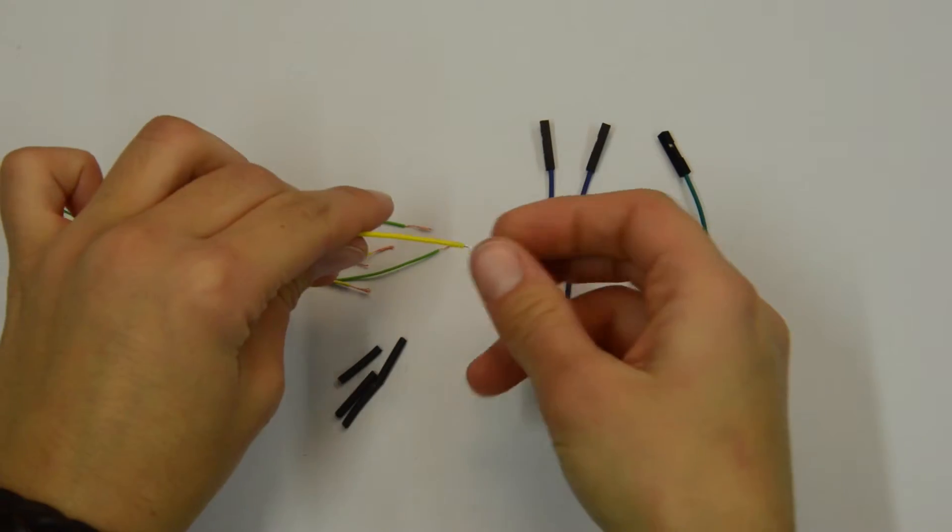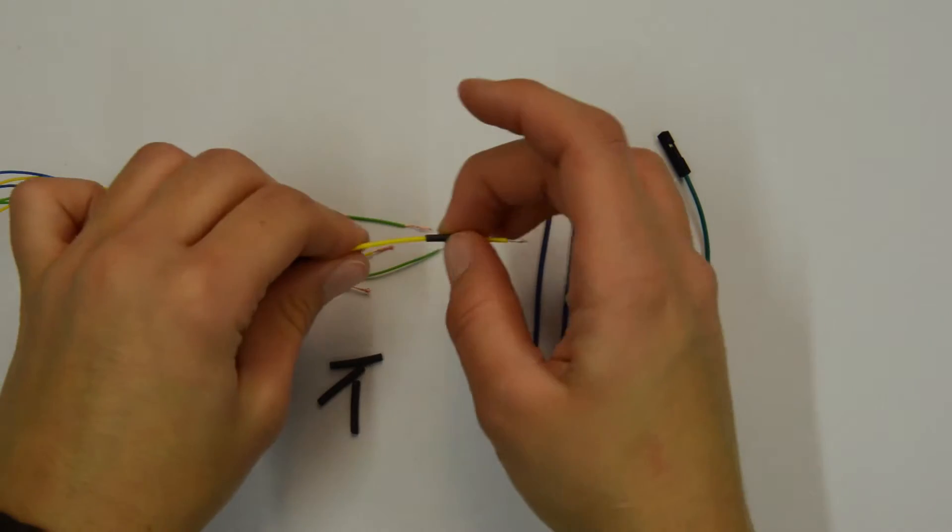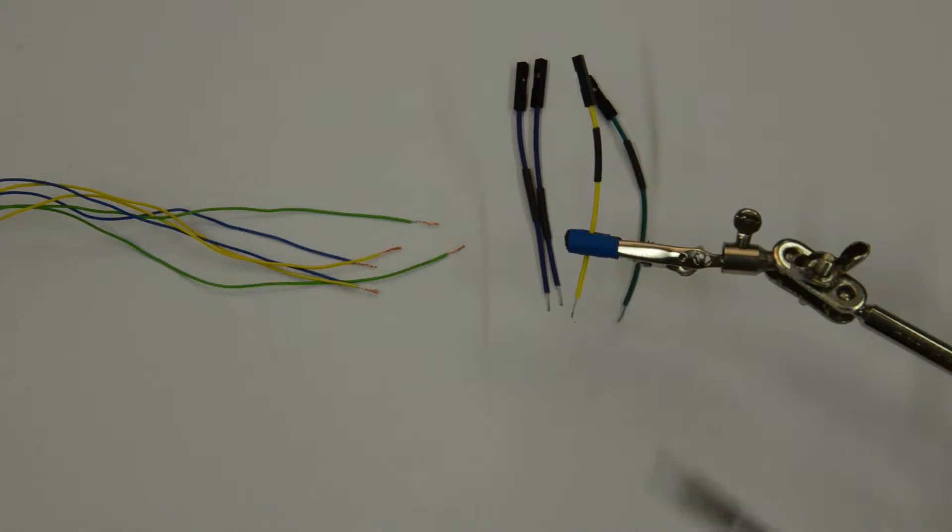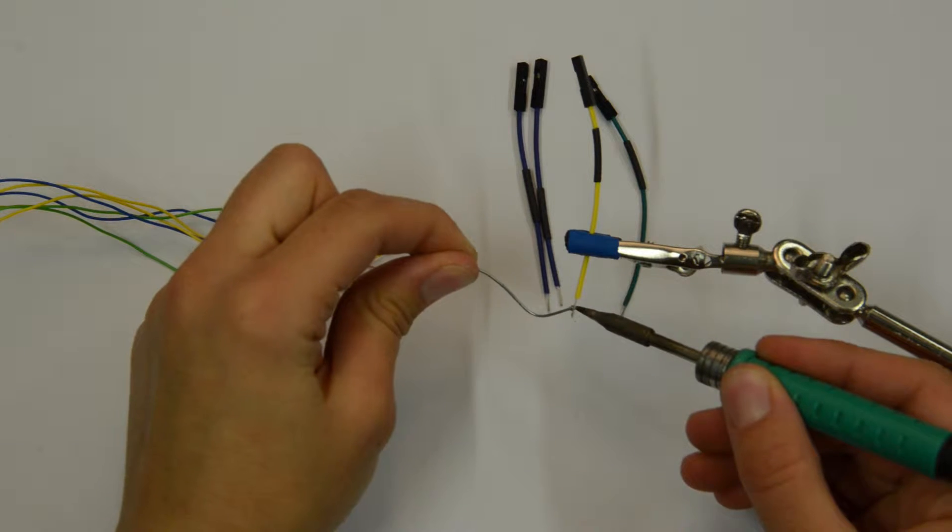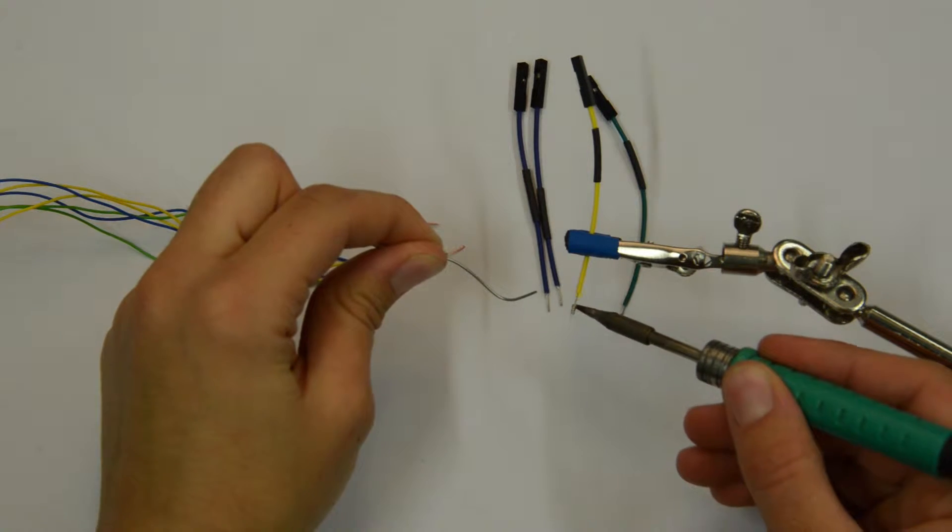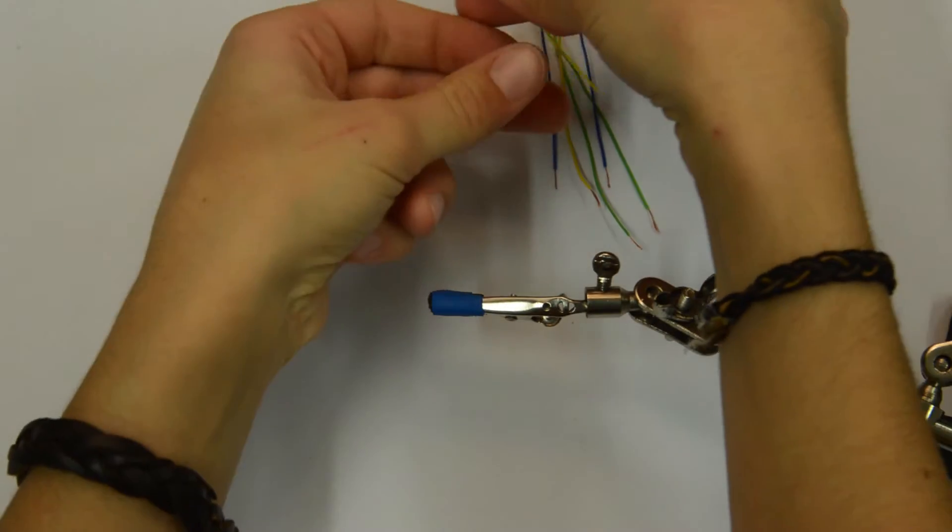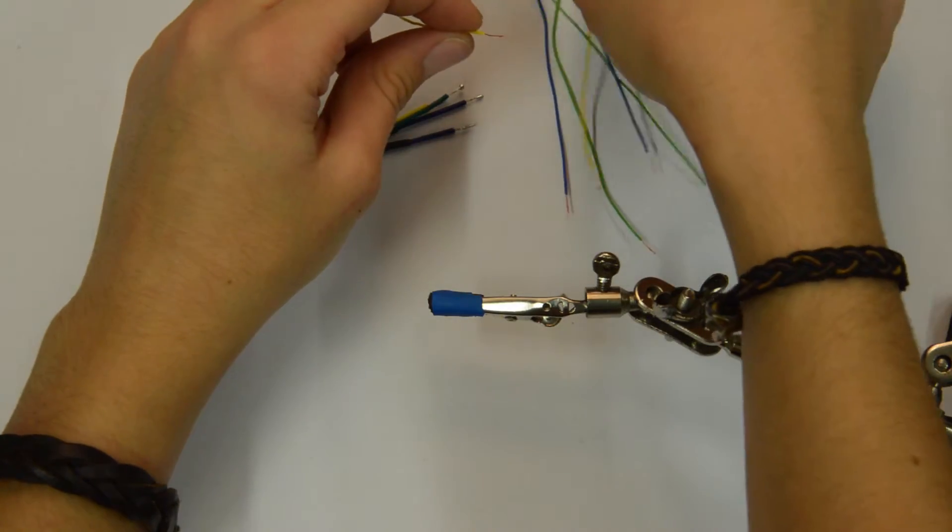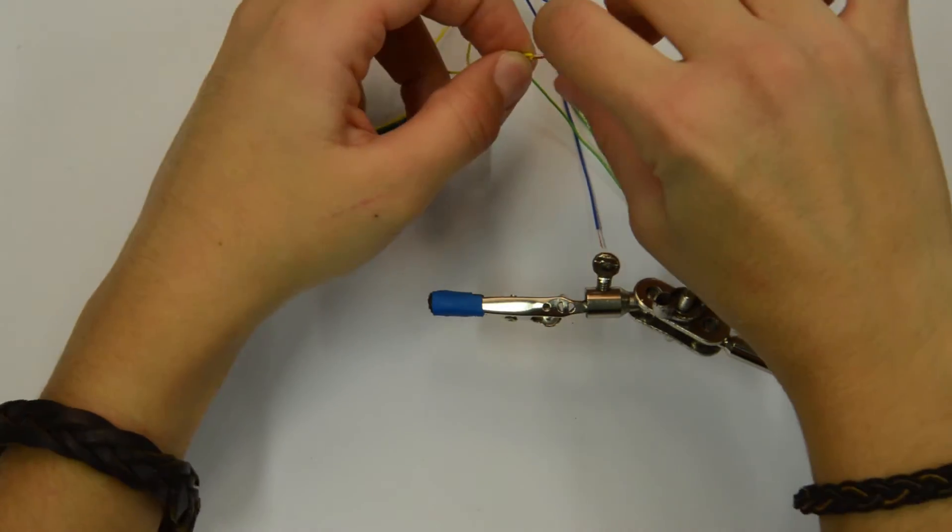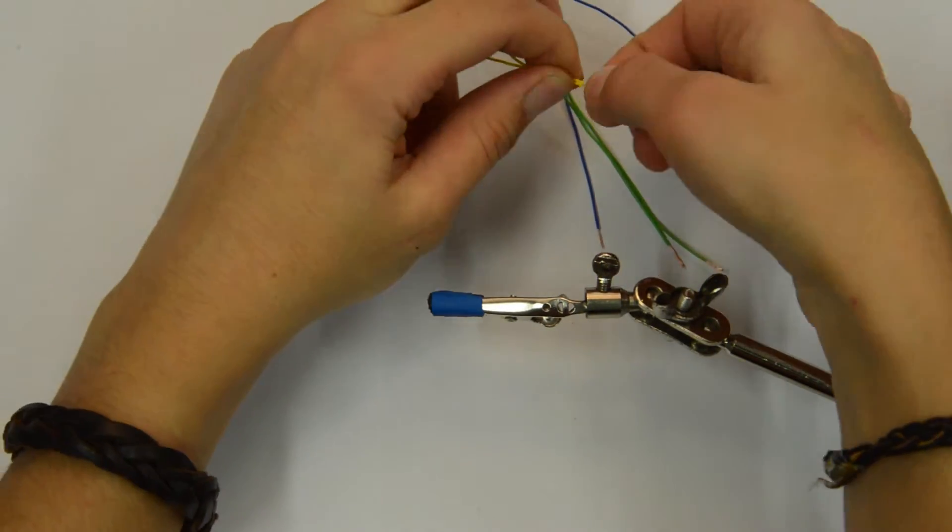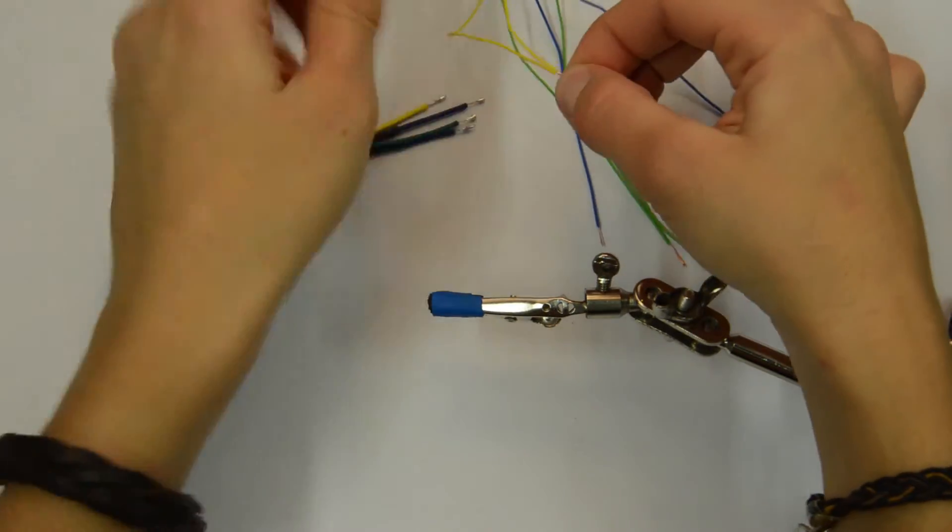Then connect all of the green SDA wires together onto one wire, and all of the yellow SCL wires together.